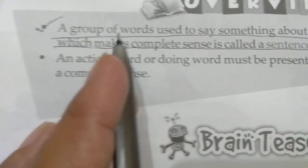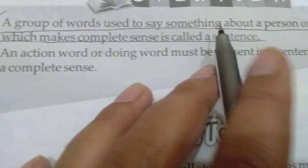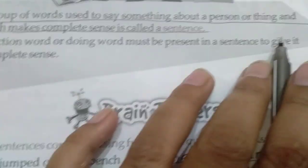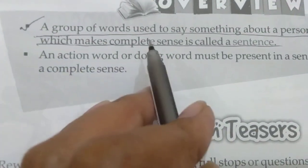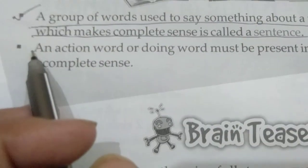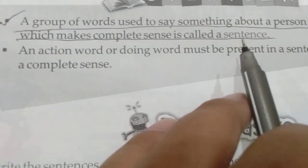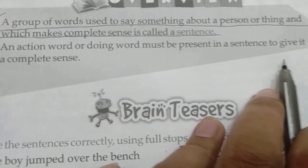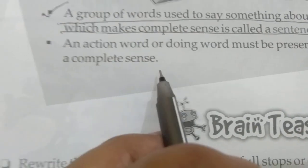Overview: A group of words used to say something about a person or things, and which makes complete sense, is called a sentence. An action word or doing word must be present in a sentence to give it a complete sense.